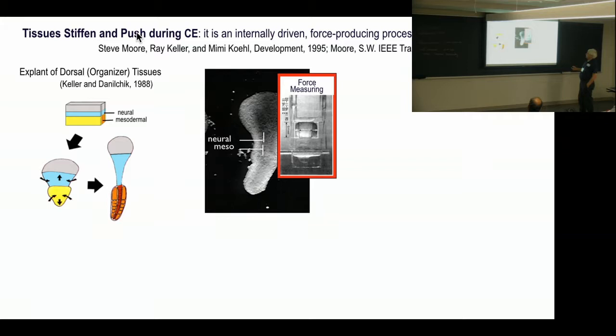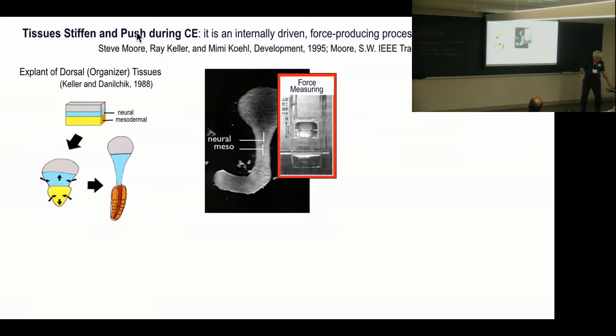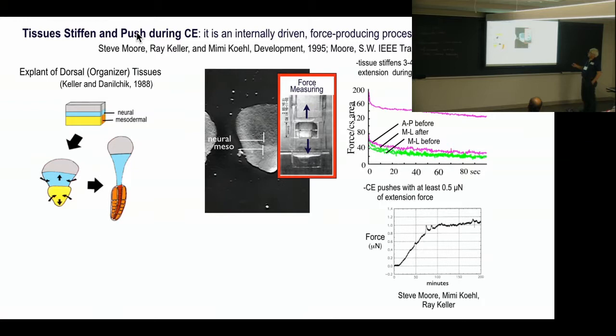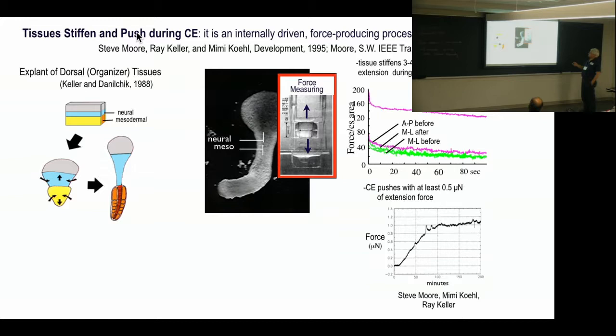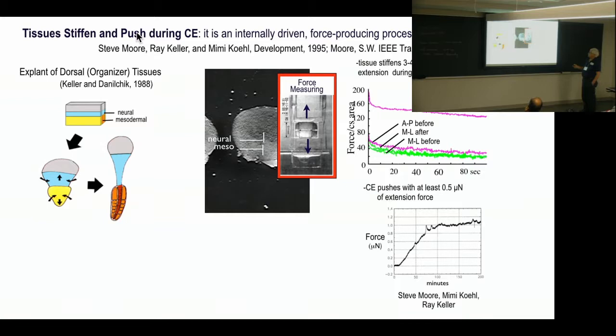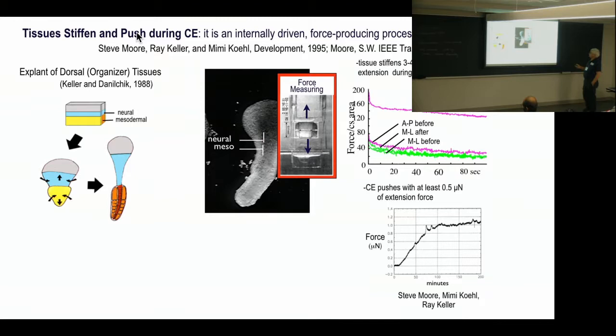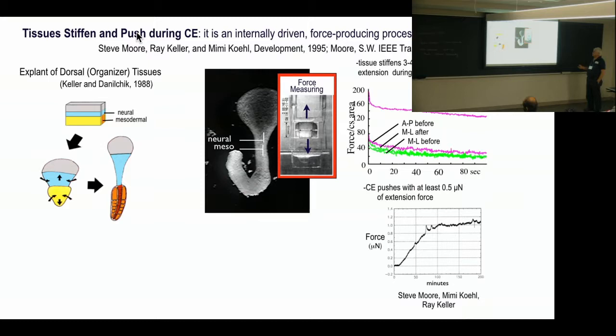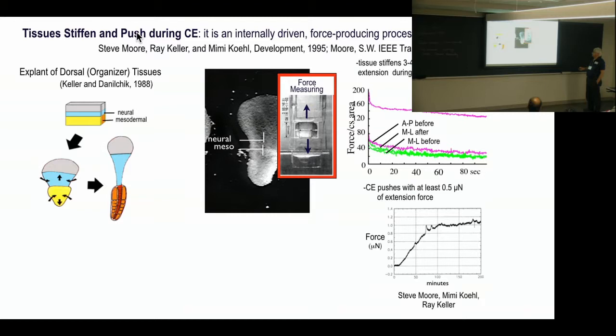And we put this little block of tissue in this thing and we can measure the force with which it could push. And we could also do the compression stress relaxation test. And what we found was that this thing stiffens when it undergoes this convergence and extension. It gets fourfold stiffer in the AP axis, but it doesn't change in the mediolateral axis. And this is, it's gushy in both directions, mediolaterally. Before it undergoes this transition into convergence and extension.